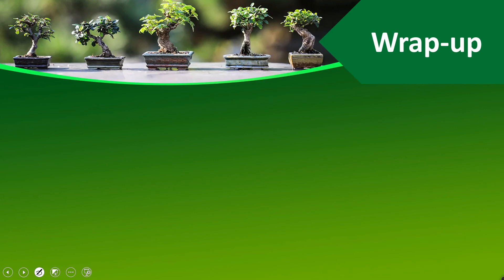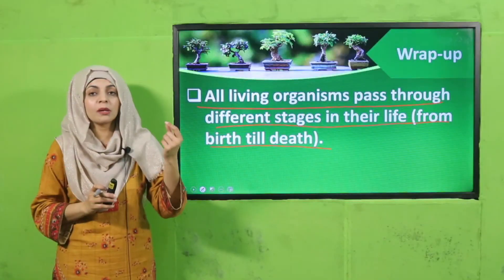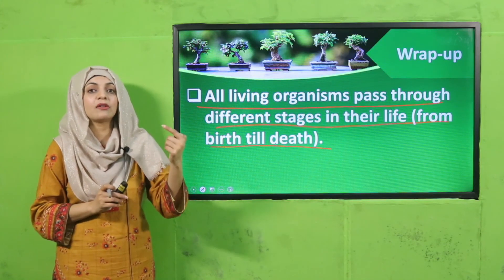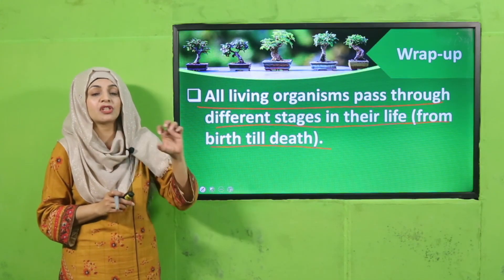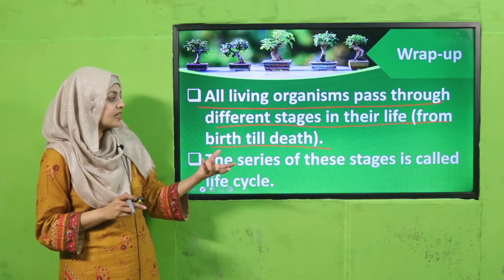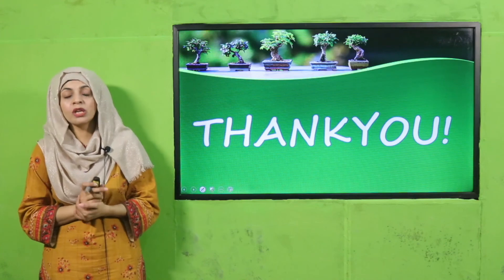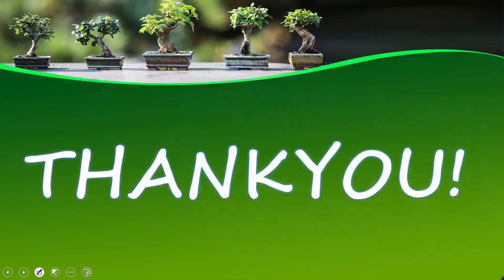Today we have learned that all living organisms pass through different stages in their life from birth till death. In plants, these are: germination, then growth and development, and then reproduction — these are the life stages of a plant, and this series of stages is called the life cycle. I hope you have enjoyed the video. Keep everybody around you safe, have a good day, thank you so much!